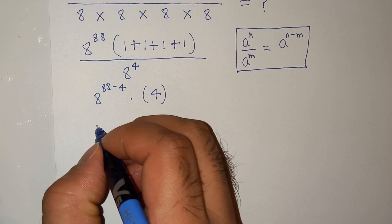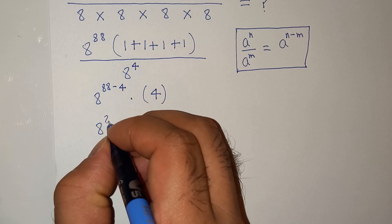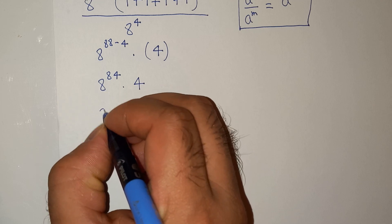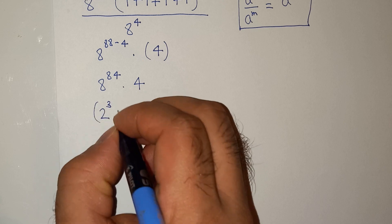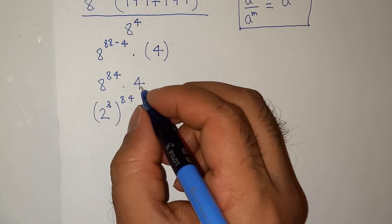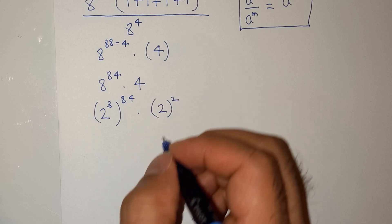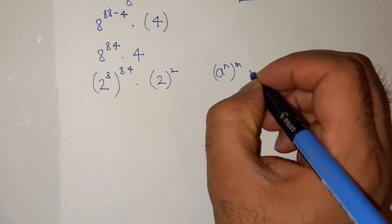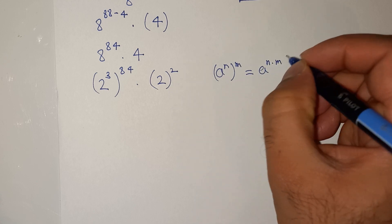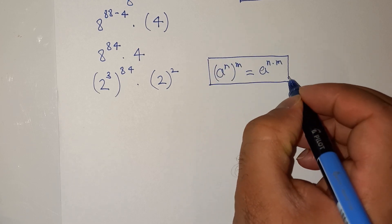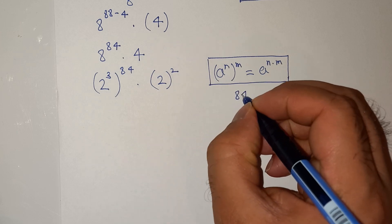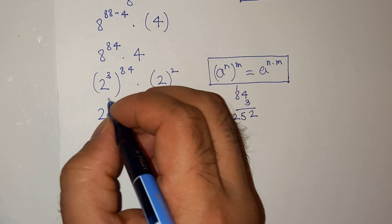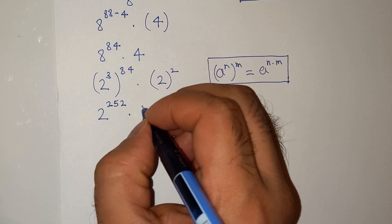So we have 8 power 84 multiplied by 4. Now this can be further written as 2 power 3, because 8 is the same as 2 power 3 — all raised to the power 84 — multiplied by 4, which can be written as 2 squared. Now we apply the rule a power n power m equals a power n times m, so 84 multiplied by 3 is 252. This gives us 2 power 252 multiplied by 2 squared.